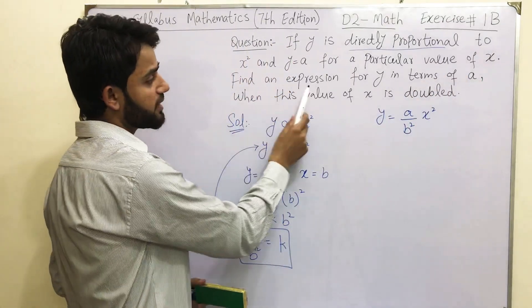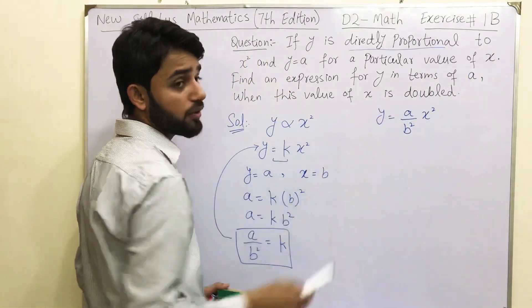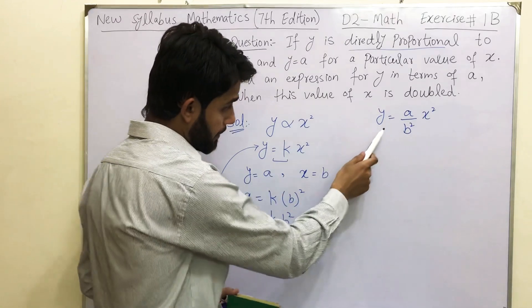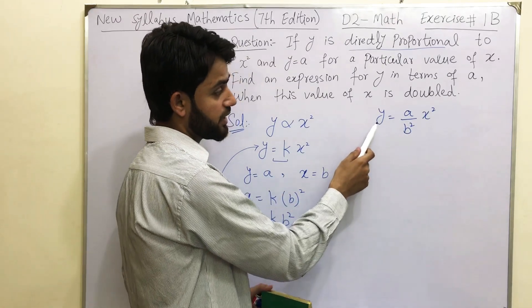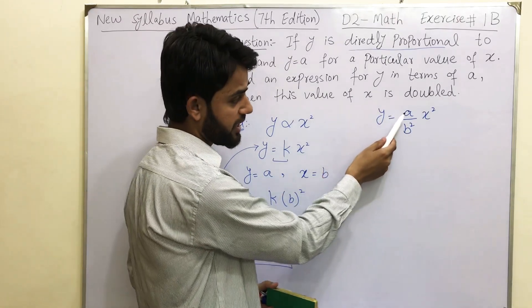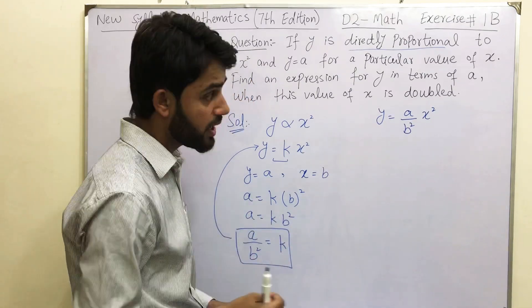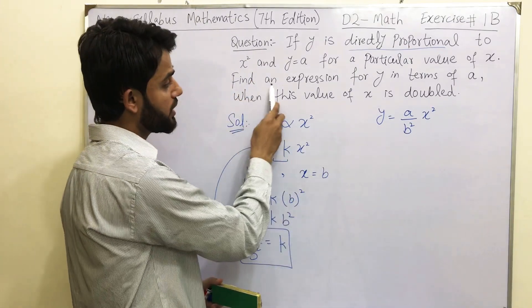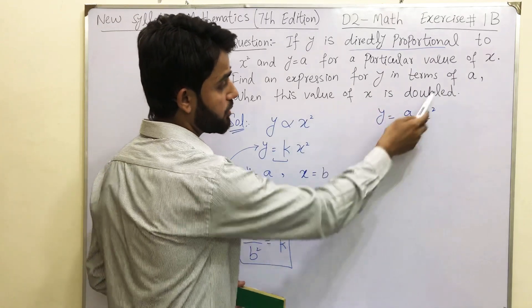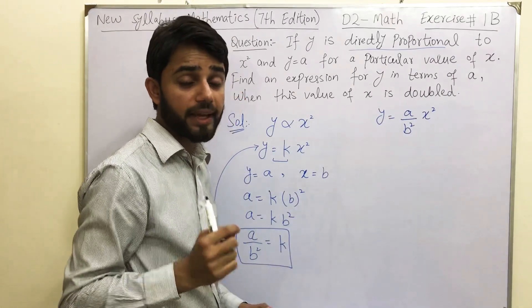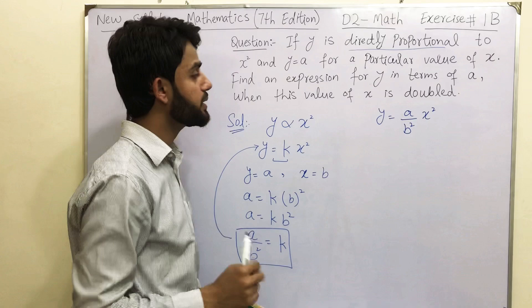Now find an expression for y in terms of a. If you look at this step right now you will see that this expression for y contains a, b, x square. So there are three variables at the moment. They want you to find out an expression for y in terms of a. There should not be any variable other than a.